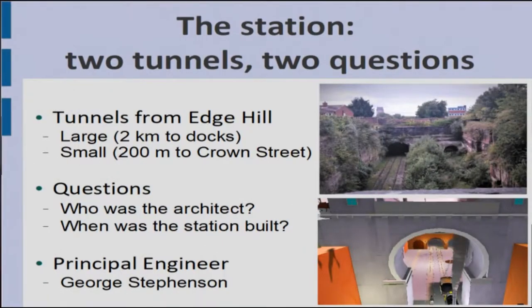The station was accessed via tunnels. One of them is missing in the middle of the photograph at the top — this was the large freight tunnel that went down to the docks, two kilometres long, so very extensive for the time. There is also next to it a small tunnel that came into that bank.